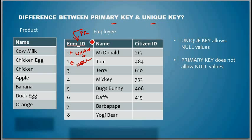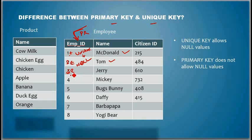The business rule is you cannot have an employee who doesn't have an employee ID, and that is implemented by having a primary key here. Mr. McDonald joined the company, so he has an employee ID. When Tom joins, he was assigned employee ID 2. You cannot have Jerry without an employee ID, and Jerry's employee ID cannot be 2 because Tom already has employee ID 2. So that uniqueness as well as not having a null value is enforced by primary key.